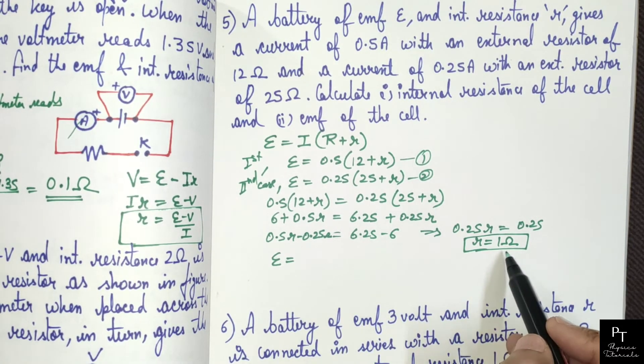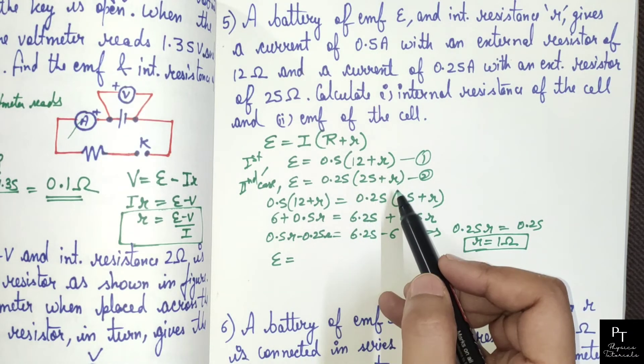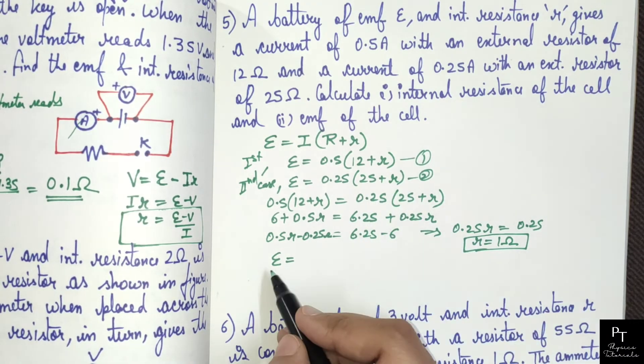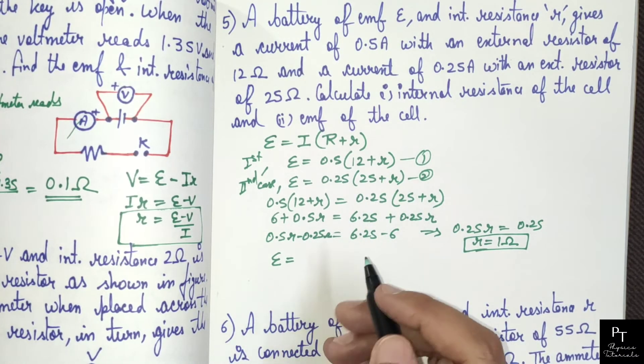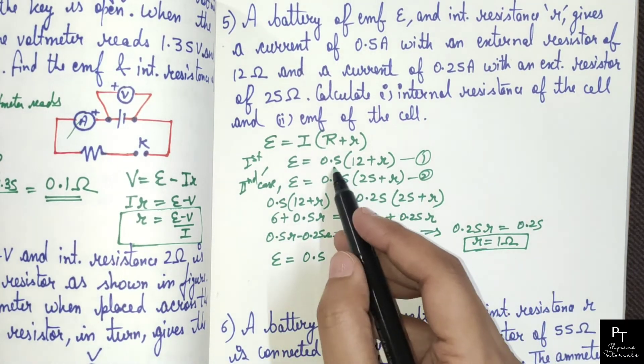Now we will put this value in any equation to get the EMF of the cell. E equals 0.5 into (12 + 1), giving EMF equals 6.5 volts.